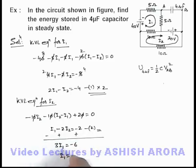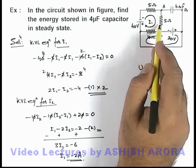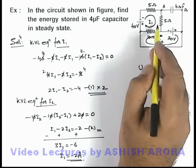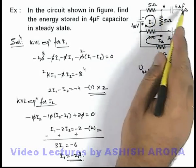So here we are getting the value of i1 is minus 2 ampere. This is the current in this branch of circuit which will help us in calculation of potential difference from a to b.